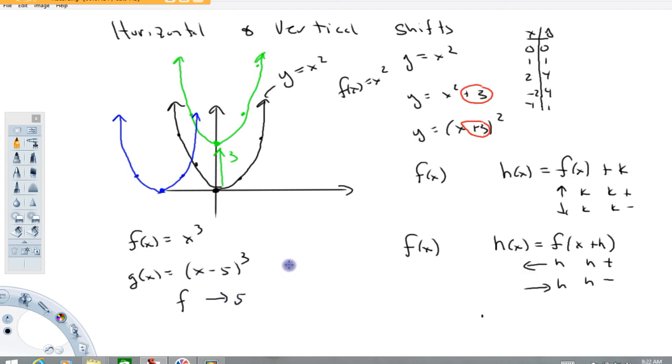If we had another function here, if g of x were equal to x plus 5, the quantity cubed, then this graph would be this one shifted left by five units.